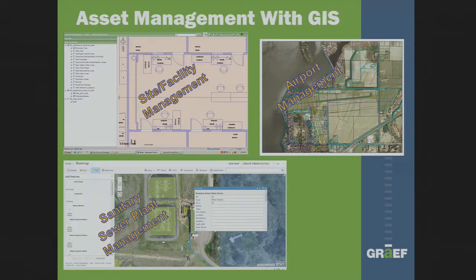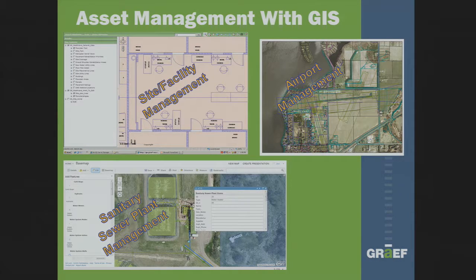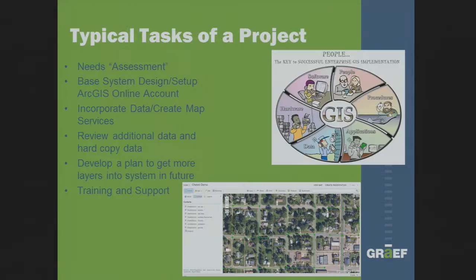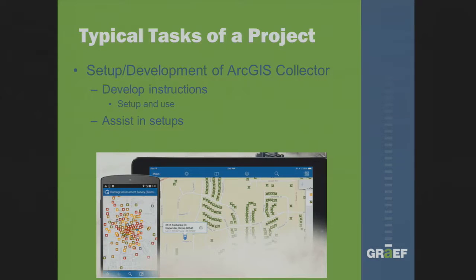They have a few things to manage. They manage their facilities and their sites. They don't have airports, but that's another community right next to them. They do have their sanitary sewer plant, so they manage the actual plant inside their GIS and ArcGIS Online. They manage all of the equipment within the plant — every motor, all the moving parts — everything that has to be maintained or operated is managed within that system.